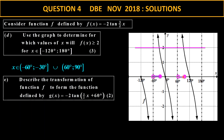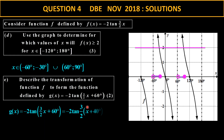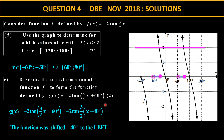Describe the transformation. You can see there is still a negative 2 and negative 2, so there's no reflection. I only have an angle added. I need to take 3 over 2 as a common factor, and 60 divided by 3 over 2 gives 40 degrees. The plus sign tells me it was shifted to the left — so it was shifted 40 degrees to the left.